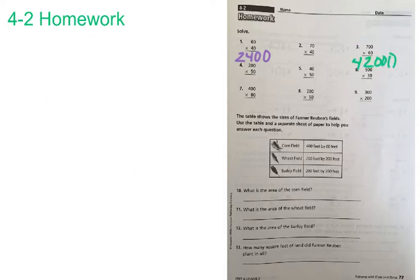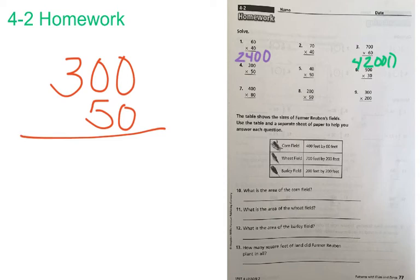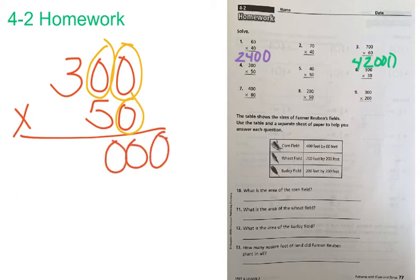Let's go ahead and practice the hanging the zeros one more time. We'll complete number 4 together, and here we have 300 times 50. When she did the hanging the zeros, she just had us count the zeros, 1, 2, and 3, and then hang them right down, 1, 2, 3. Then you complete your 5 times 3, which is equal to 15, so your answer is going to be 15,000.